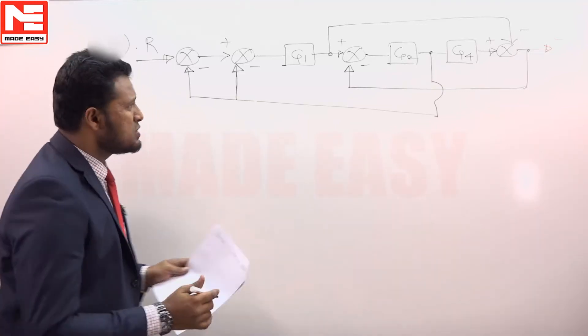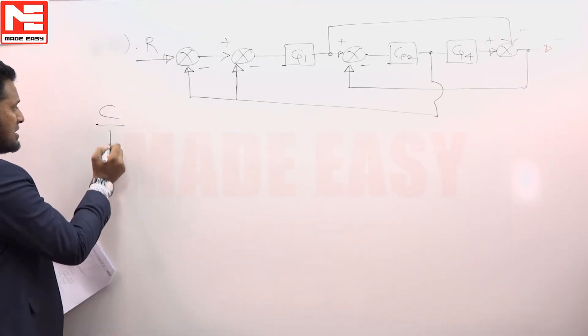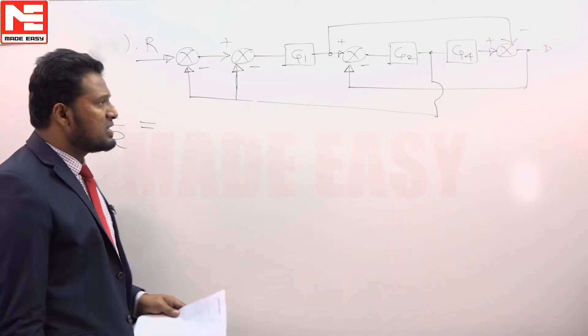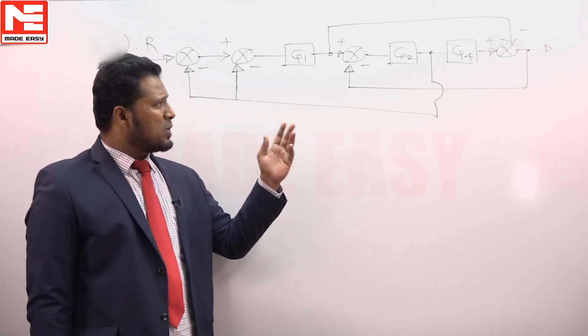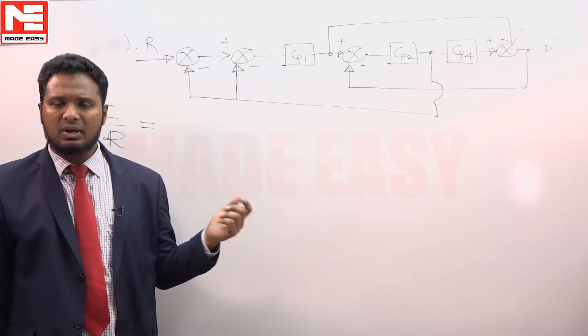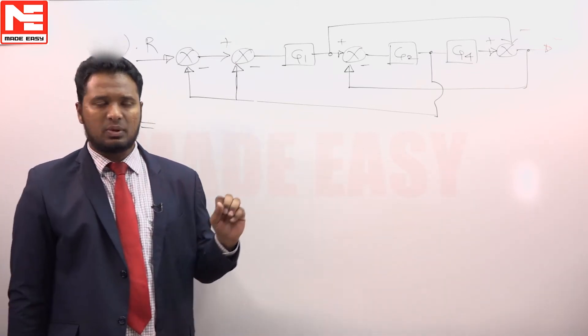A presentation of a system is given. The question is to find the transfer function C by R, which we can solve easily using Mason's formula instead of block diagram reduction, which takes time. It is easy to get the solution using Mason's formula.